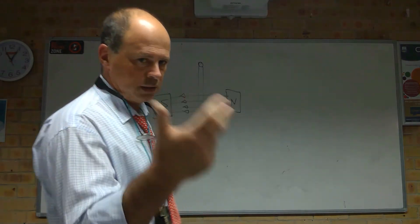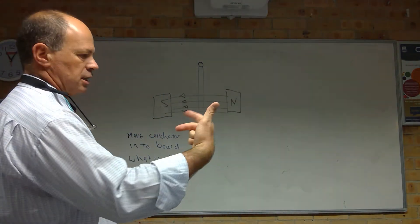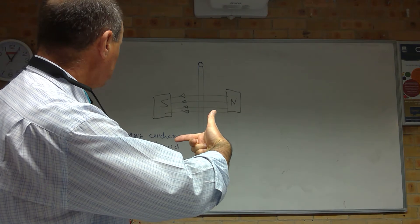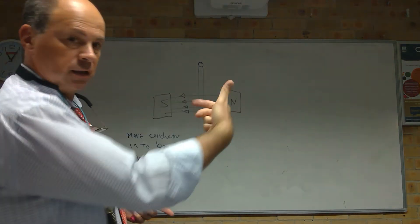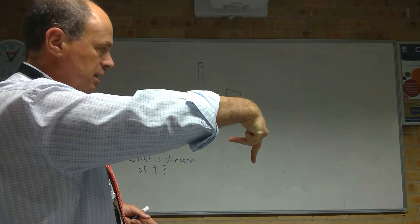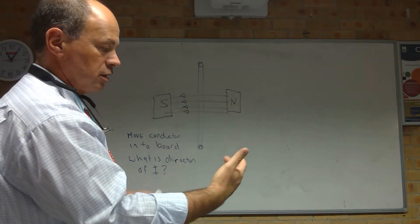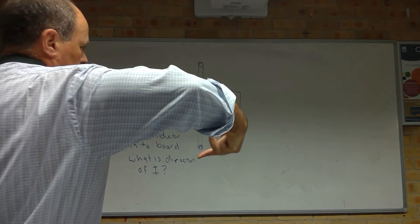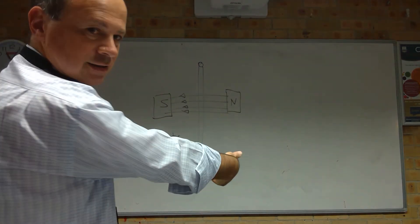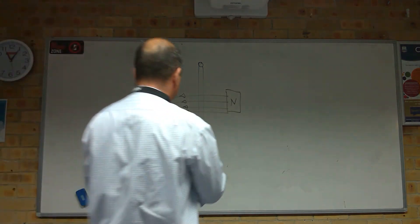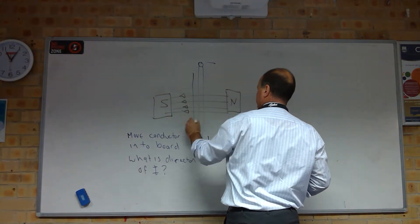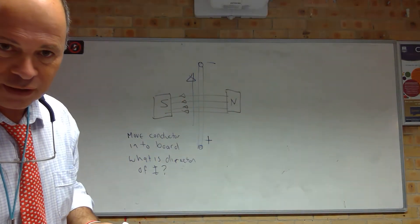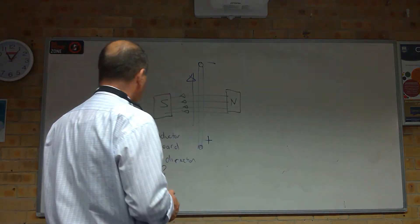Left hand was motor, right hand generator. Field is going this way. Our force — I said move the conductor into the board, so our force is going into the board. So what direction is our current? Force is into the board, field is from right to left, so current is going to be going up. Some of these really test your skills of moving your hand around.